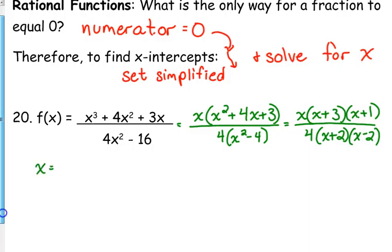You set everything in the numerator equal to 0, and you solve for x. So we've got x equals 0, we have x plus 3 equals 0, and we have x plus 1 equals 0. So we've got 0, 0 is an x-intercept. And guess what, that's also a y-intercept.